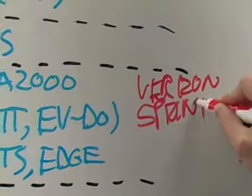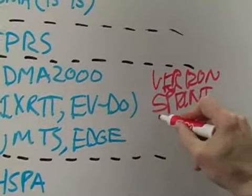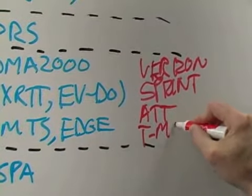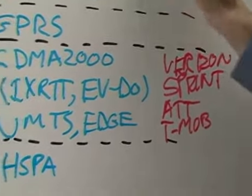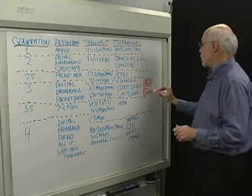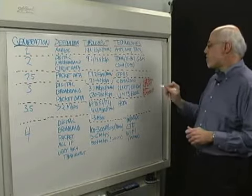And then the other competitors in this country, the major competitors, AT&T and T-Mobile, are using the evolution of GSM technology, which is called UMTS, Universal Mobile Telecommunication System. So those are the key carriers today.